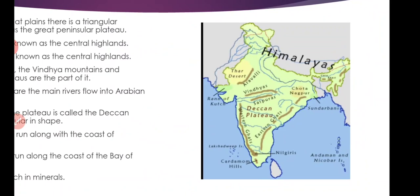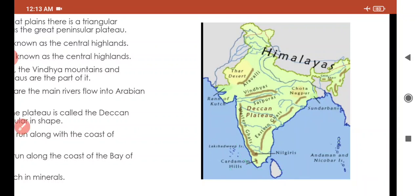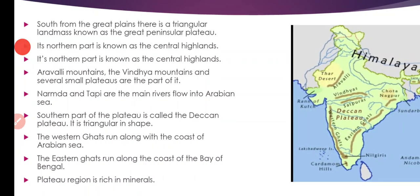You can see in this map — India ka south area three parts mein ocean se covered hai. Here is Arabian Sea, here Bay of Bengal, and in the southern part there is the Indian Ocean. Tino taraf se land area oceans ne cover kiya hua hai. This is called the Great Peninsular Plateau, and it is in the south of the Great Plains.